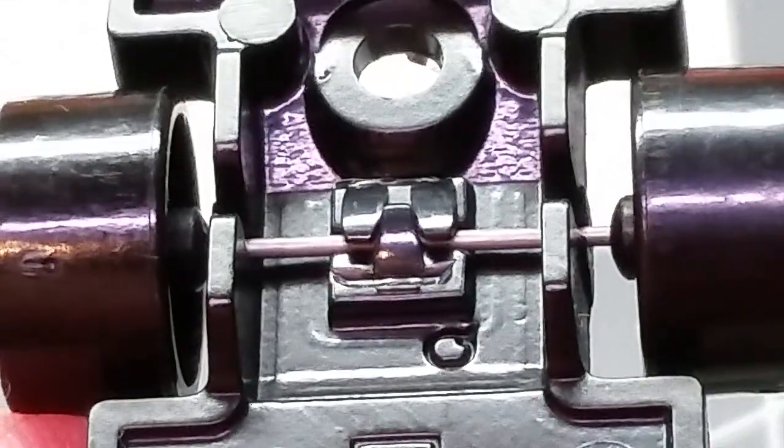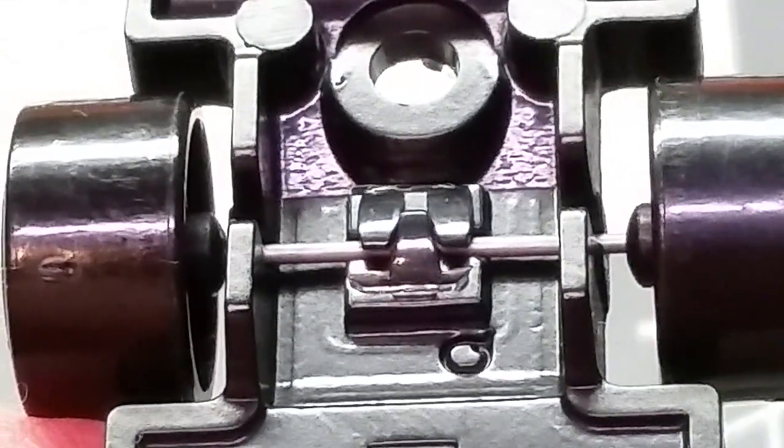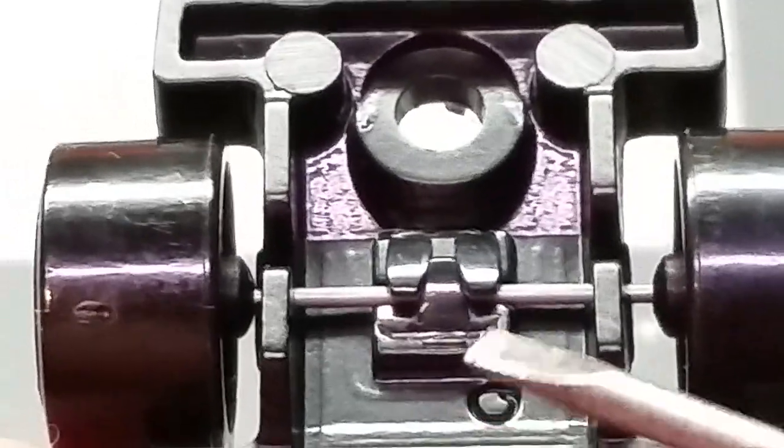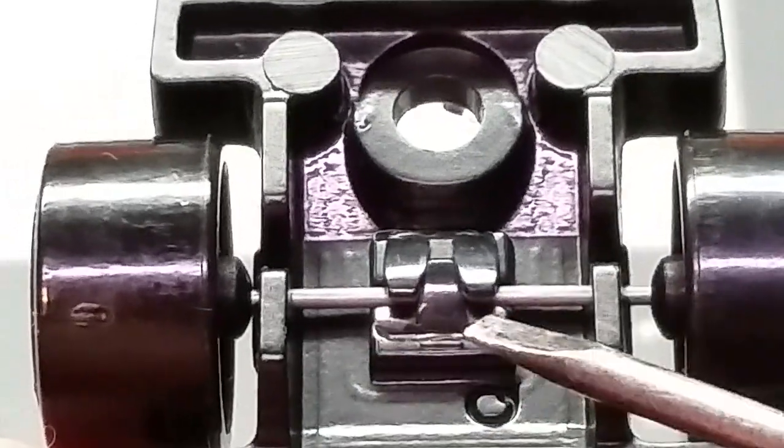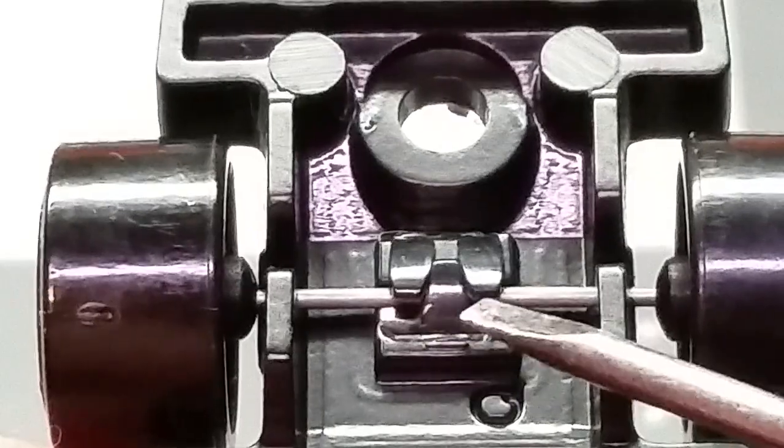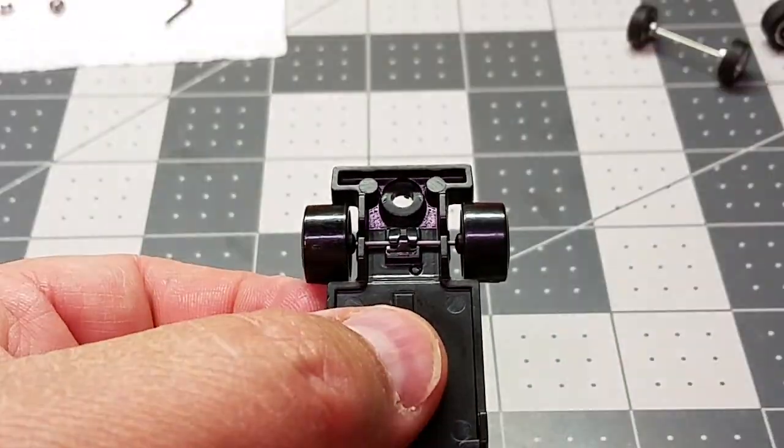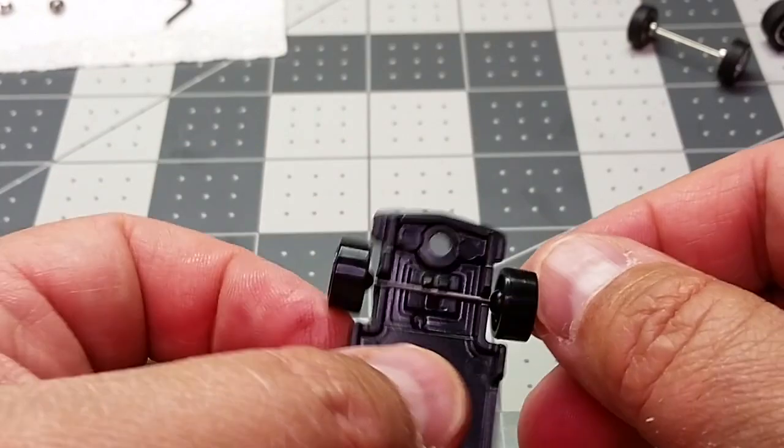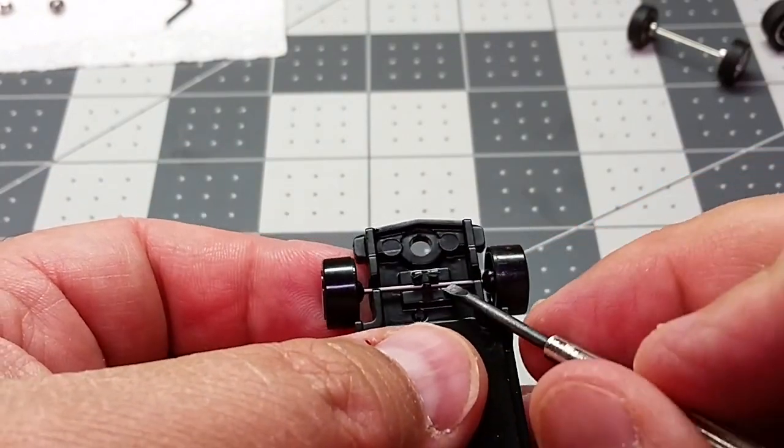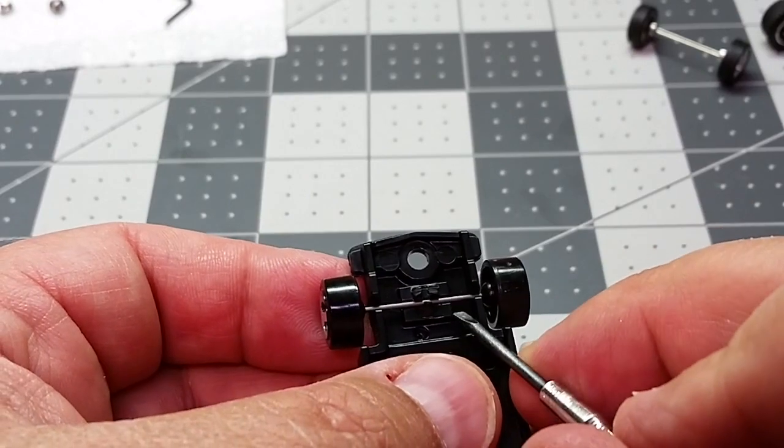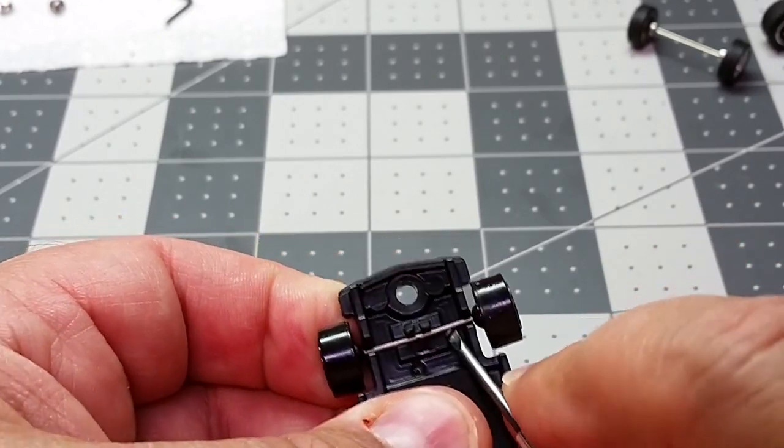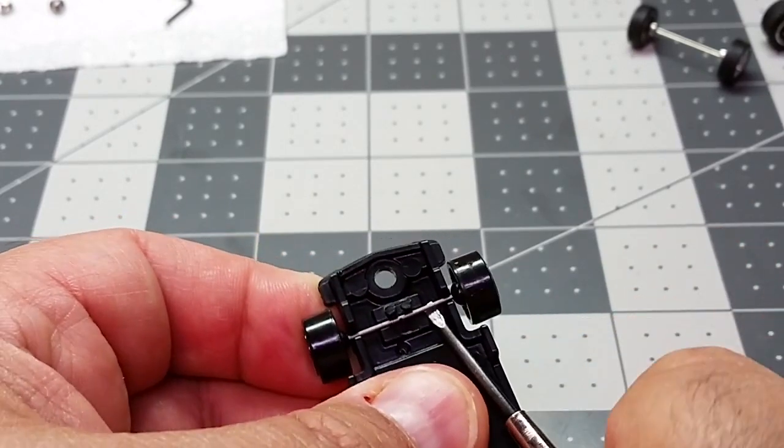Next thing we have to do is bend the plastic tabs on the base back. In this case you've got three tabs folded over. Just get your screwdriver in there and pry the tabs back. I've got them pried back and just pop the axle out by prying it a little bit with a screwdriver and it should just pop right out.